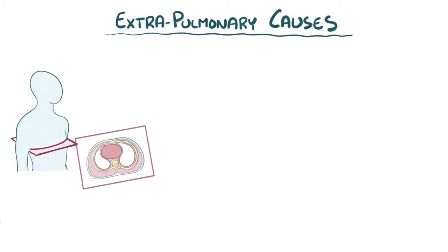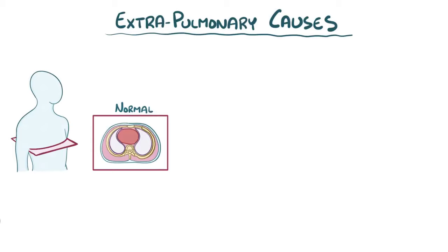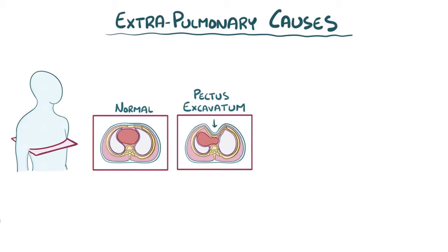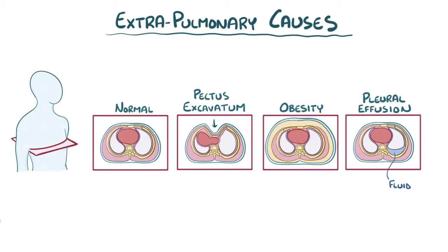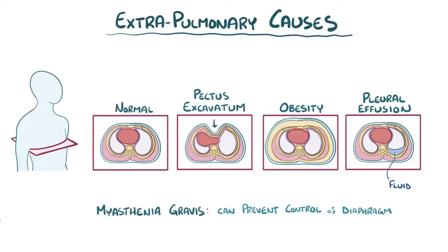Extrapulmonary causes of restrictive lung disease typically involve damage to the ribcage and diaphragm, or the nerves which innervate those structures. When that happens, the chest wall can't expand, preventing the lung from fully expanding. For example, someone might be born with pectus excavatum, where the chest wall folds inward; or a person might be obese, which can put a lot of pressure on the chest wall. Another cause is a pleural effusion, where fluid builds up around the lungs and prevents them from fully inflating. Another cause is myasthenia gravis, an autoimmune condition which destroys receptors at the neuromuscular junction and prevents neurons from effectively controlling muscles like the diaphragm.